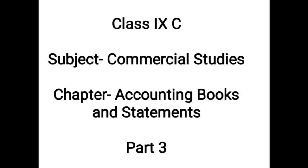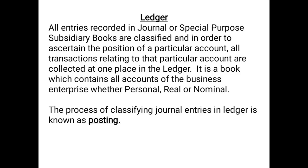The work of classifying similar nature transactions in an account form is known as classification, which is done in the book of ledger. All entries recorded in journal or special purpose subsidiary books are classified in order to ascertain the position of a particular account. All transactions related to that particular account are collected at one place in the ledger. Ledger is a book which contains all accounts of the business enterprise, whether personal, real, or nominal. The process of classifying journal entries in the ledger is known as posting. The recording of transactions in entry form in the book of journal is known as journalizing, whereas the process of classifying journal entries in the ledger is known as posting.